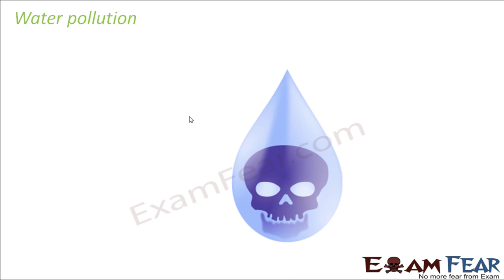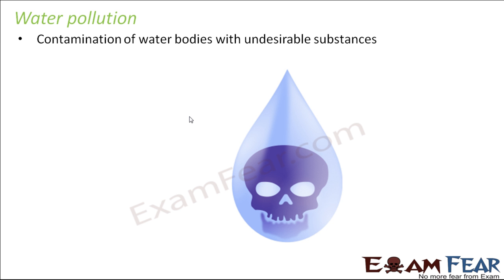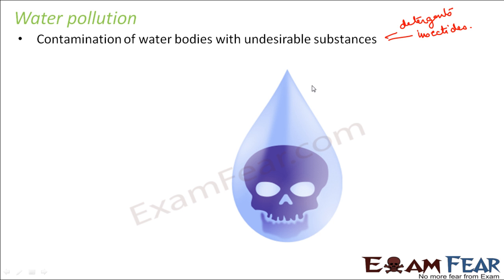Now let us see what water pollution is. Now that we have discussed air pollution in detail, water pollution is the contamination of water bodies with undesirable substances. These undesirable substances could be detergents, because detergents are chemicals containing harmful compounds which make water contaminated enough to be harmful for drinking purposes. They could also include insecticides, pesticides, or herbicides used in agriculture, and industrial solvents or chemicals used in industries.